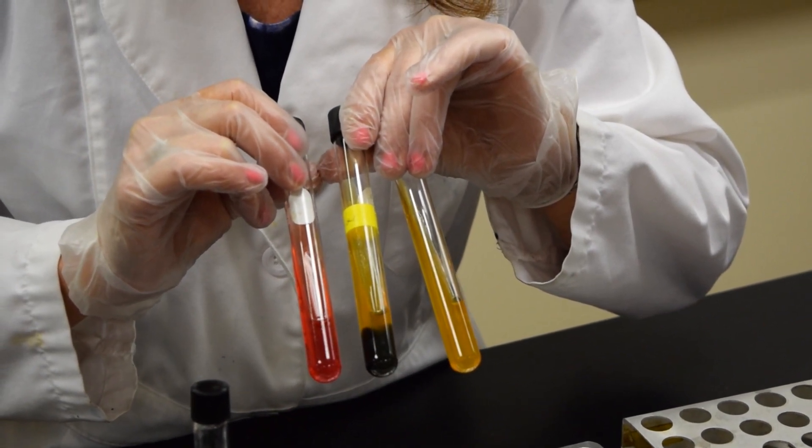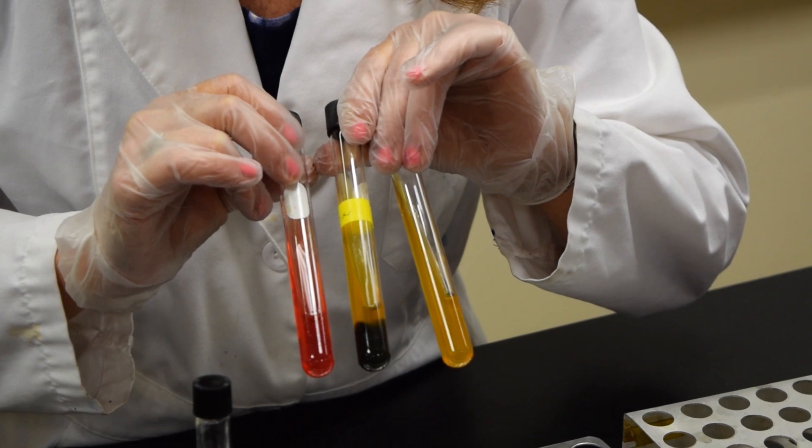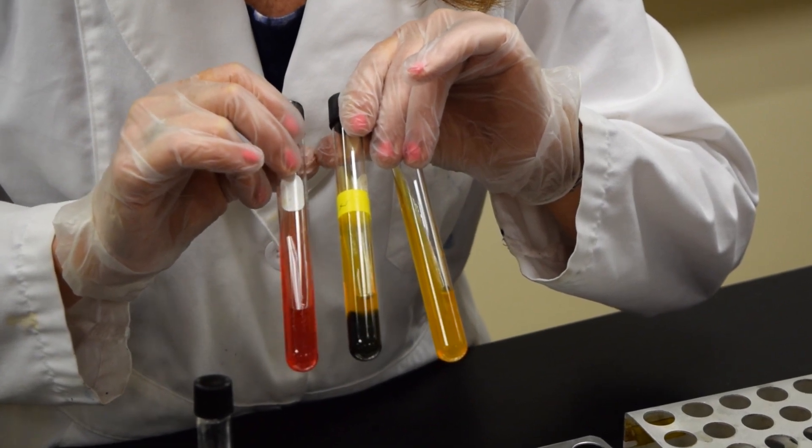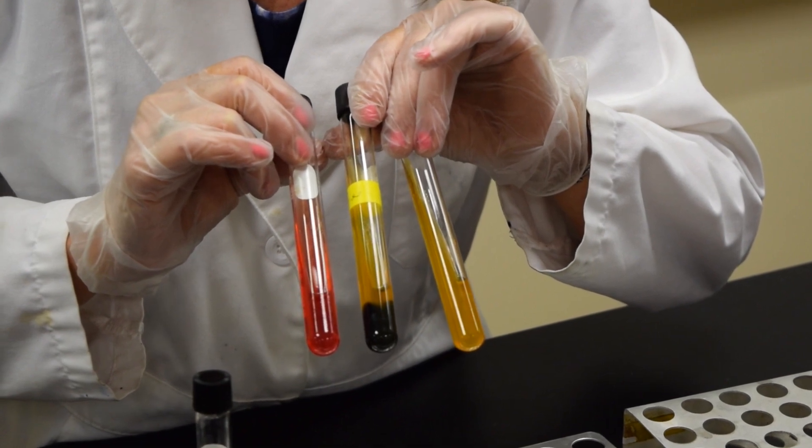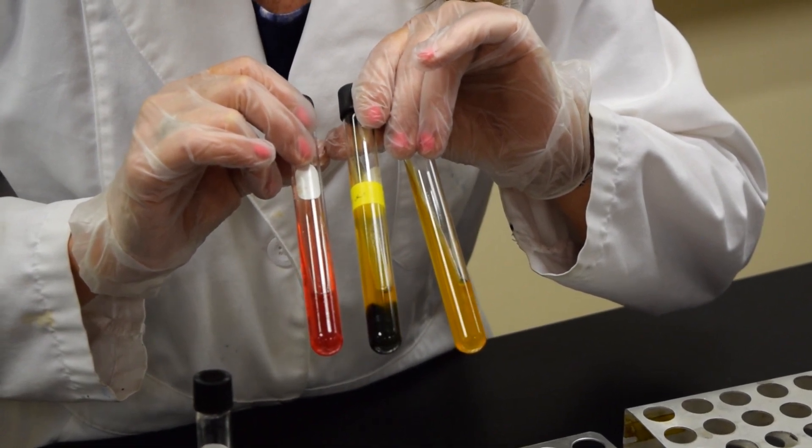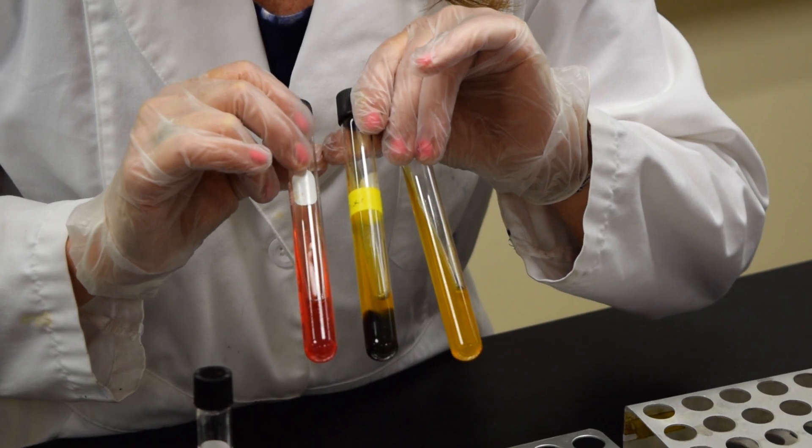These three tubes, the only one that would be positive for H2S is the one in the middle. The tube on the right is yellow, but there is no black color in the bottom of the tube, and the tube on the left-hand side is red with no black color in the bottom of the tube.